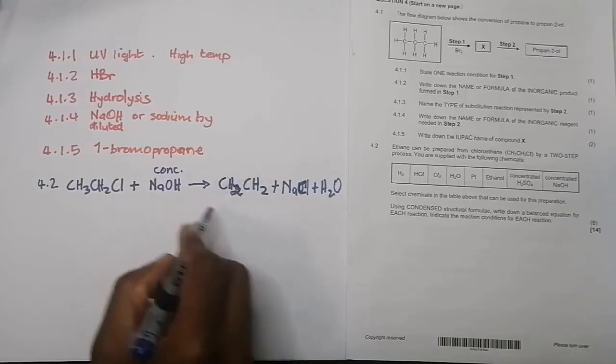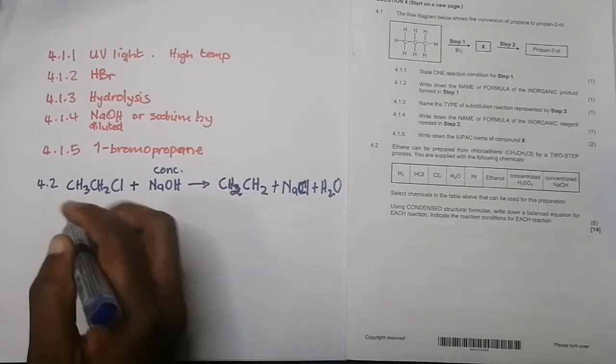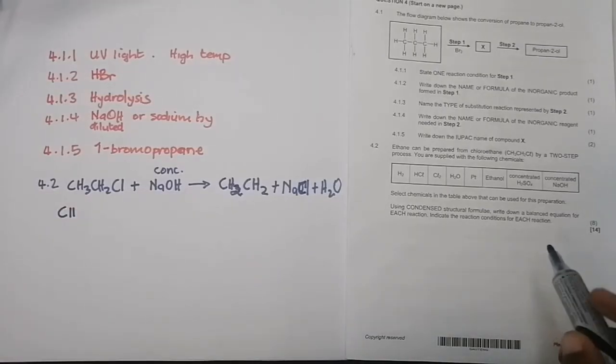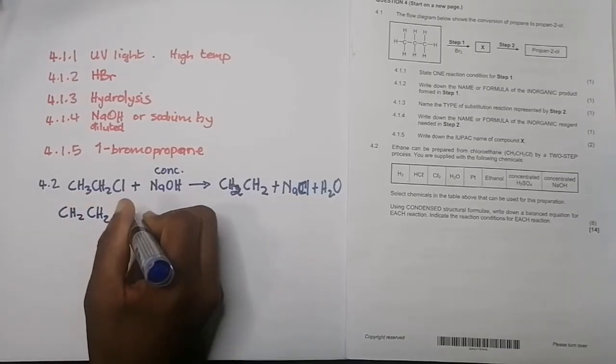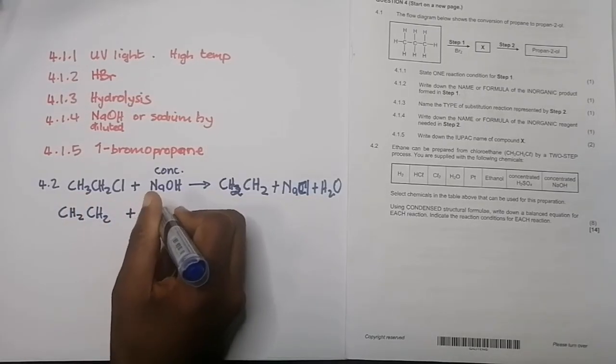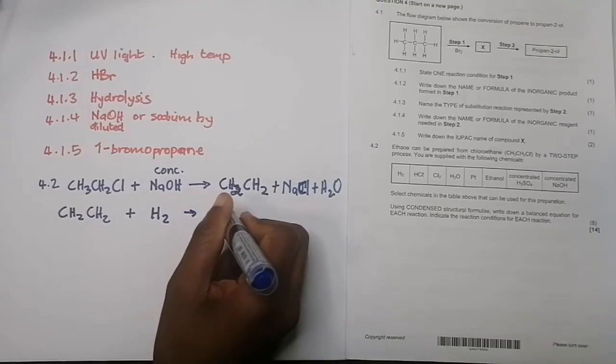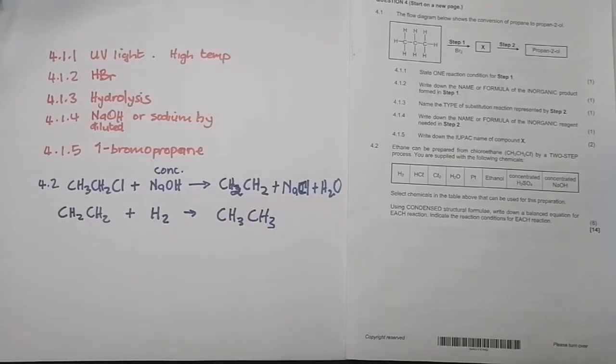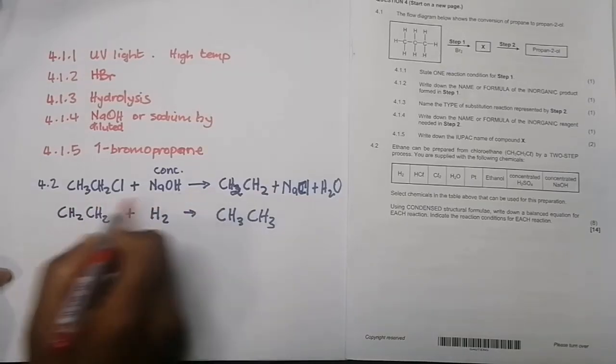And then what you're going to do in step number two is that I'm going to now take the ethene and we are now going to react it - remember where we're trying to go is we're trying to form an alkane out of it. So we're going to take that CH2=CH2 and we now need to react it with hydrogen, so that's H2. And what would happen in this case, we would now get on the other side CH3CH3.